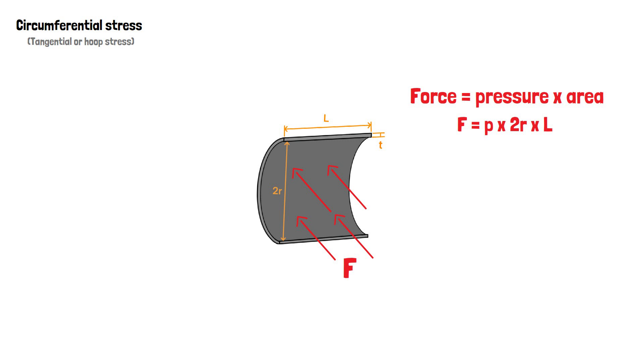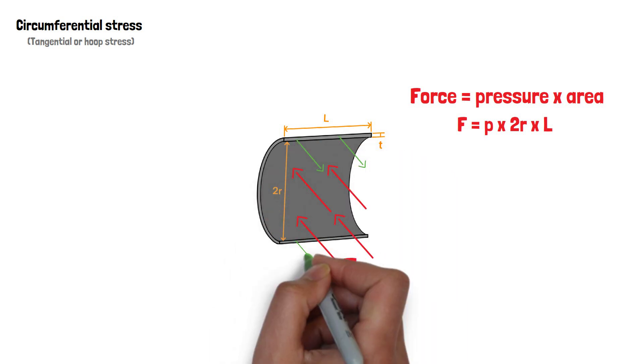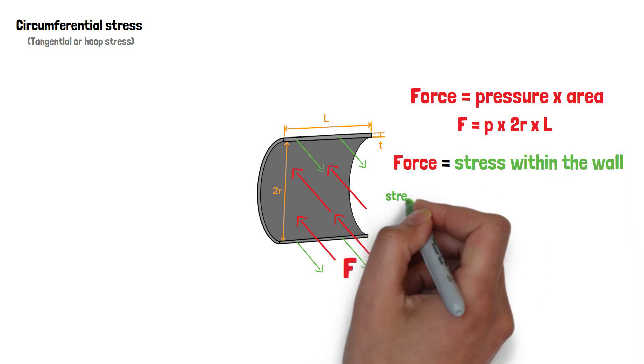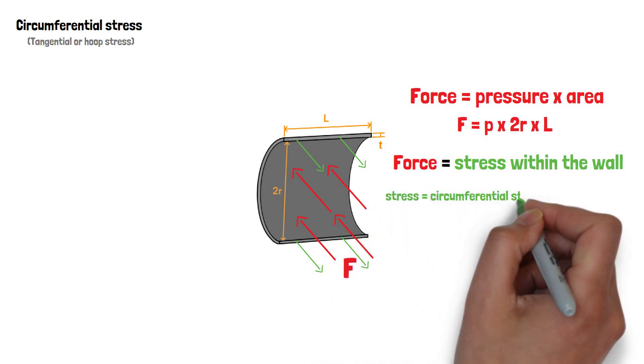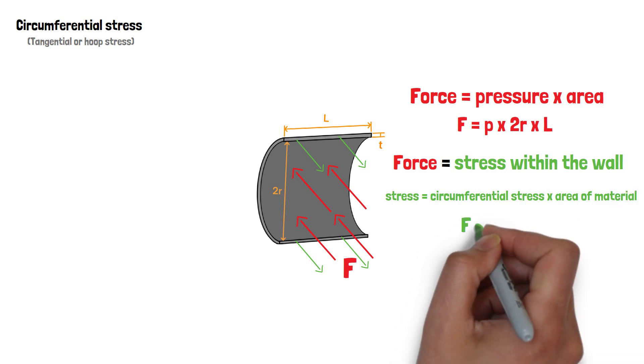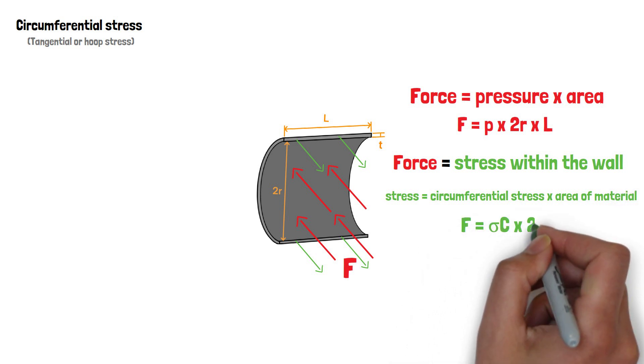As with the longitudinal stress, as long as the material can withstand the force, it is also equal to the stress in the wall. This stress is calculated by circumferential stress times the area of the material. This is found to be F equals sigma C times 2LT.